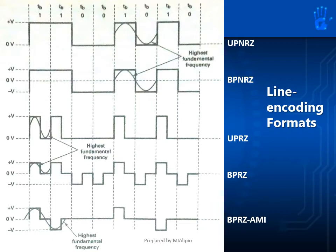Lastly, we have the bipolar return to zero alternate mark inversion, or BPRZ-AMI. This one is quite complicated compared with the others. It is bipolar, so its high and low levels are positive V and negative V respectively. It also returns to zero, so it has a transition at the middle of a bit. For bit zero, the voltage level is also zero. For bit one, it alternates between positive V and negative V. In this example, during the first bit one the voltage level is positive V, the next bit one is negative V, and so on.